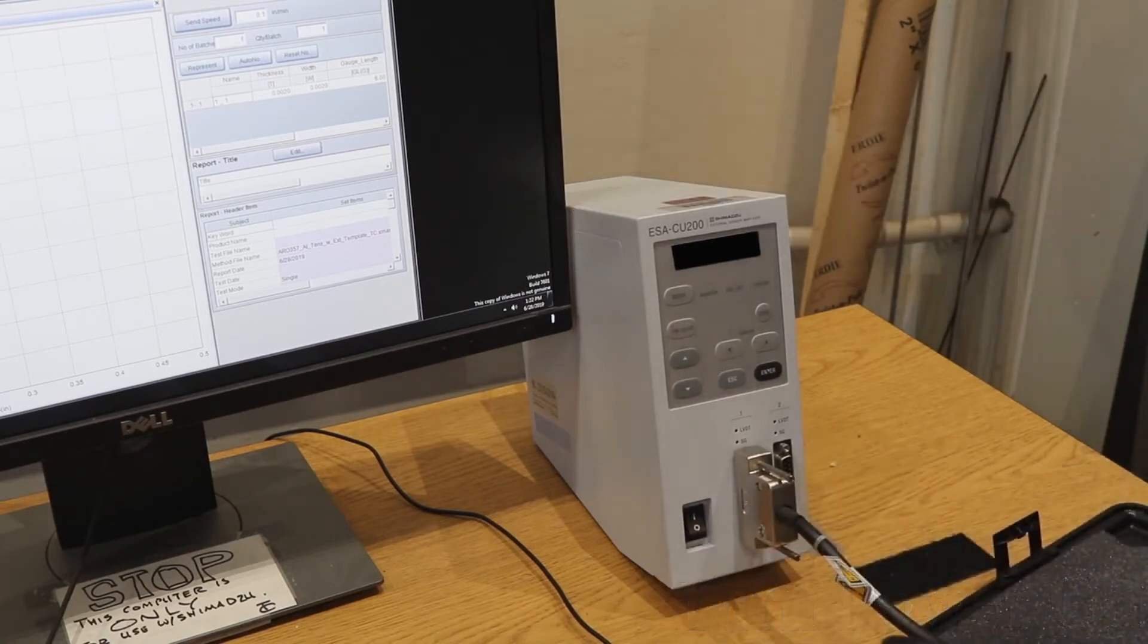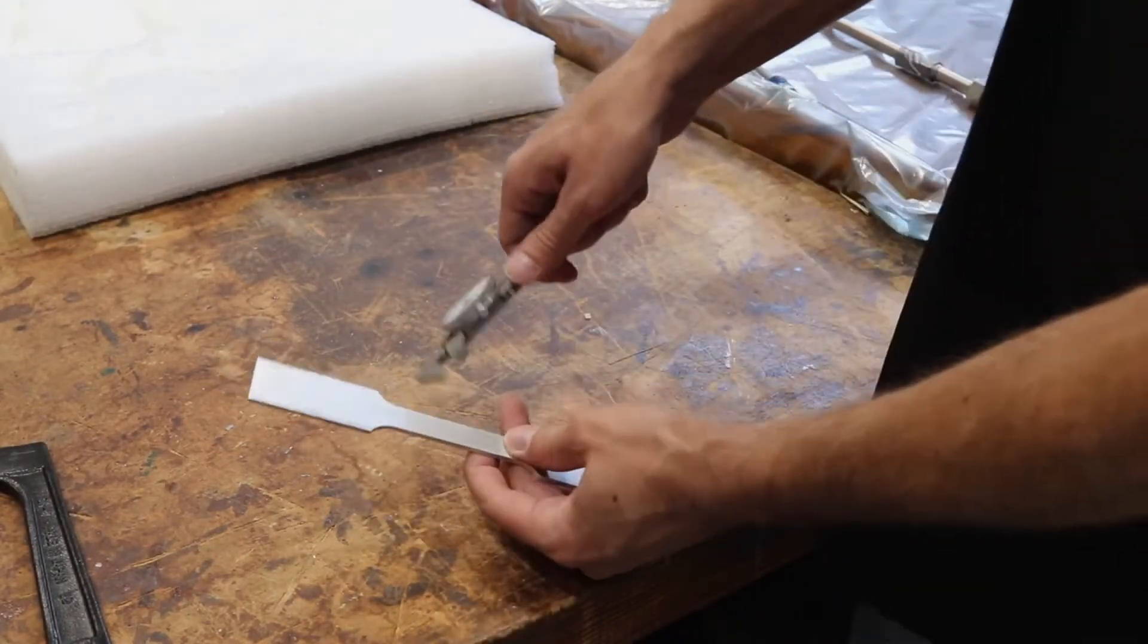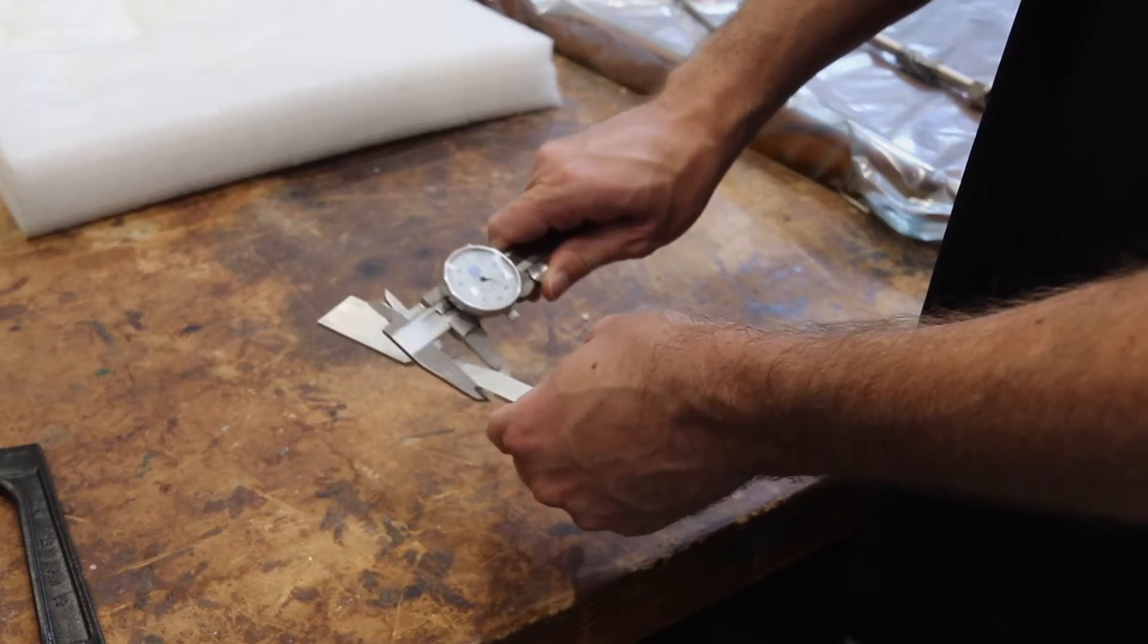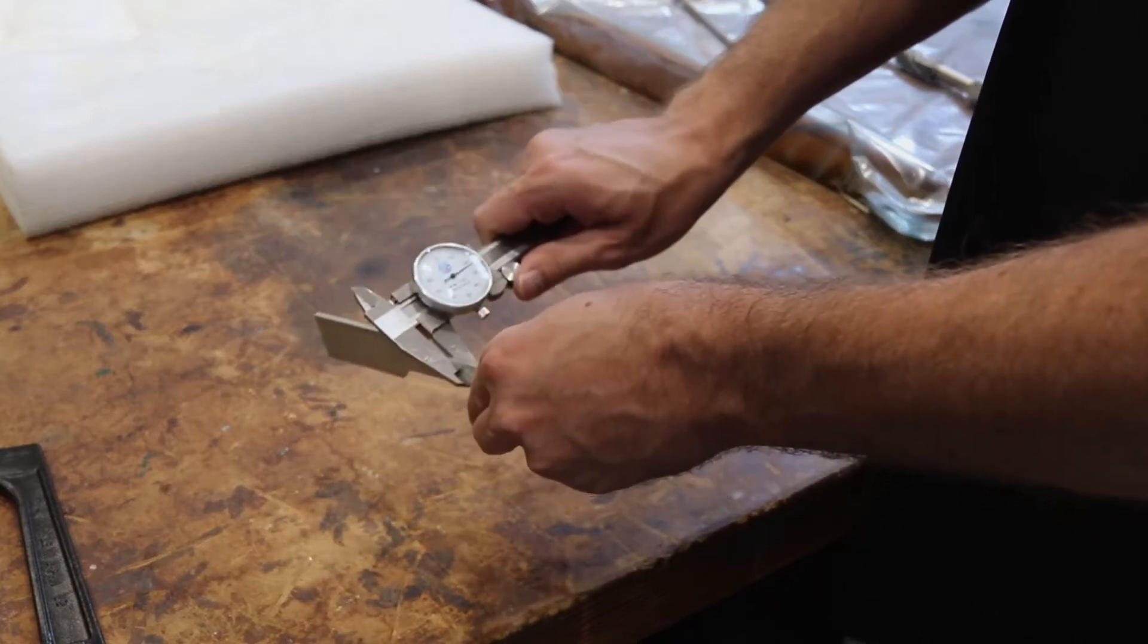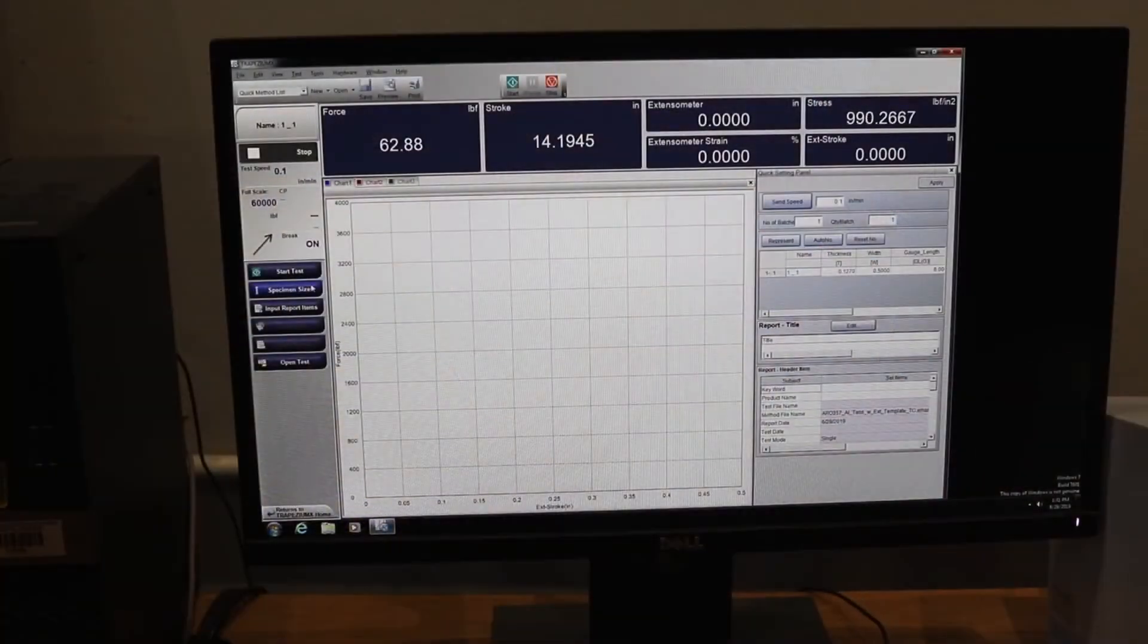Our next step involves measuring our specimen. The important measurements involved are the thickness and the width at the smallest section of the dog bone. If you are unfamiliar with using calipers, there is a video available. Now we will input our measurements obtained into the software.